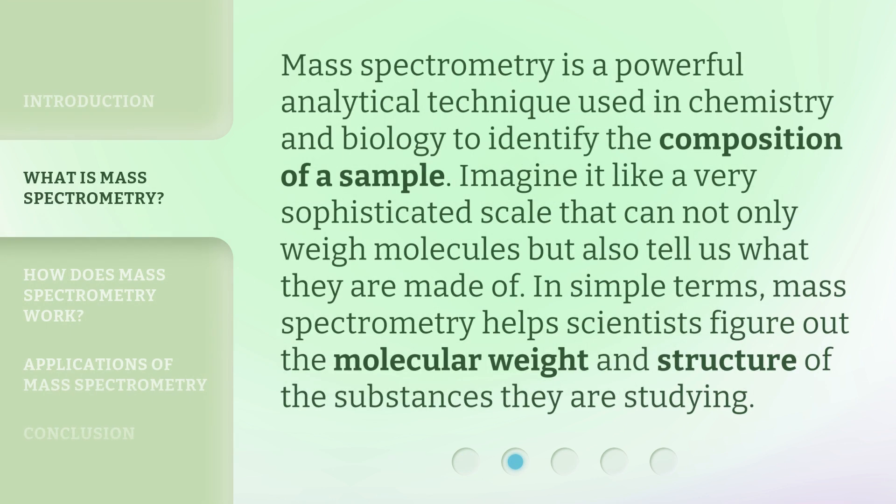Mass spectrometry is a powerful analytical technique used in chemistry and biology to identify the composition of a sample. Imagine it like a very sophisticated scale that can not only weigh molecules but also tell us what they are made of. In simple terms, mass spectrometry helps scientists figure out the molecular weight and structure of the substances they are studying.